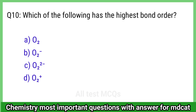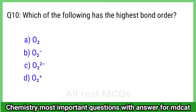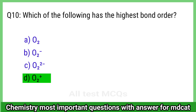Question 10: Which of the following has the highest bond order? The right answer is option D, O2 plus.